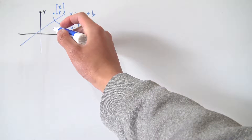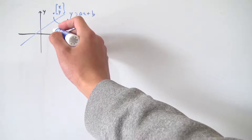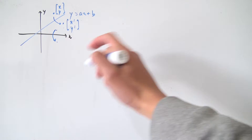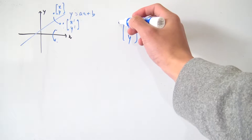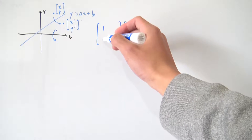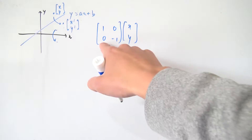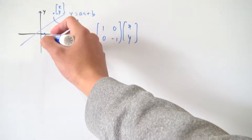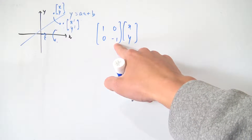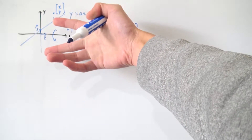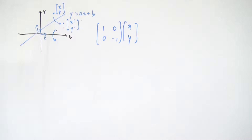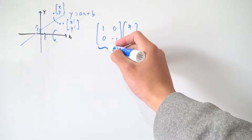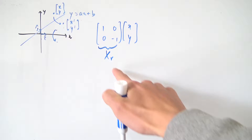Imagine we have some point and we want to reflect it across the x axis. If this point is some vector xy, then all we need to do is apply a transformation that reflects it in the x axis. That transformation is the matrix with first column (1, 0) and second column (0, -1). The first column is where i-hat lands and the second column is where j-hat lands — j-hat turns into (0, -1), which just flips everything around. I'm going to call this matrix Xr, the reflection in the x axis.